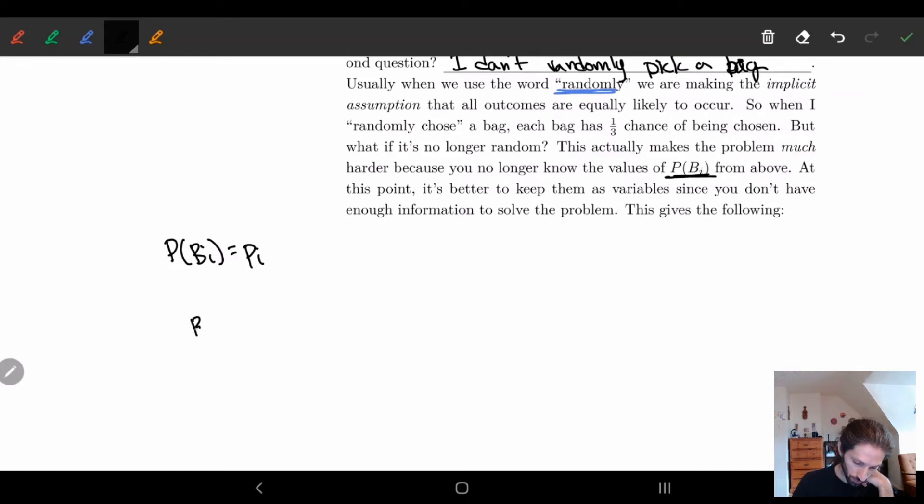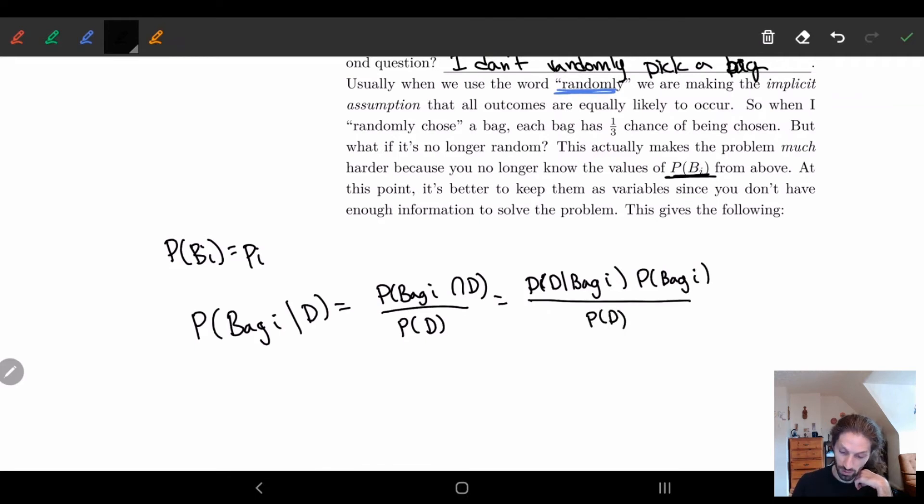So for example, if I look at the probability, we'll do this generally. If I look at probability of bag i given dark, this is what we're trying to solve. We said that this is the probability of bag i given D divided by the probability of D, and this is the probability of D given bag i times the probability of bag i divided by the probability of D. All right.